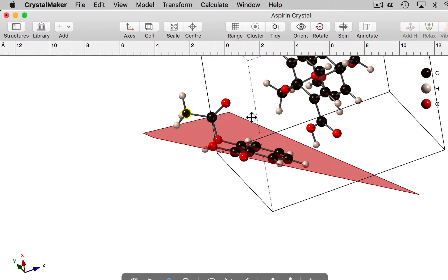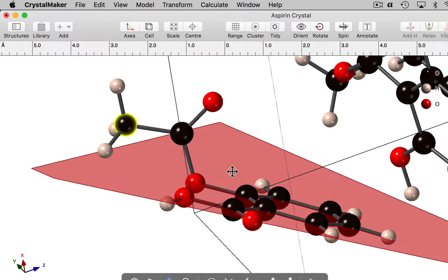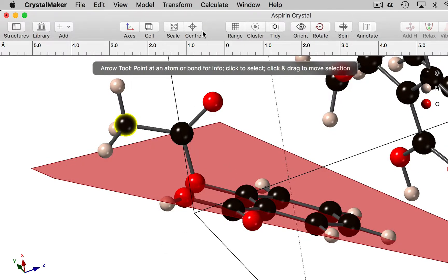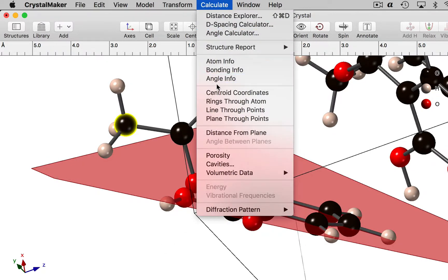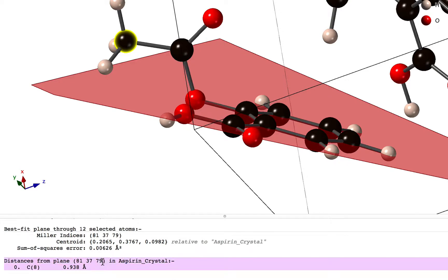So let's just move that to the middle of the screen and we'll zoom in a little bit. What's the distance of that atom from the plane? Well we can use the calculate commands to calculate distance from plane, and again that's displayed at the bottom of the screen. That's 0.938 angstroms.